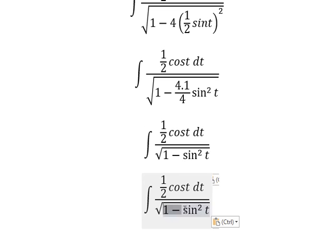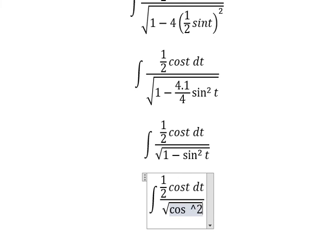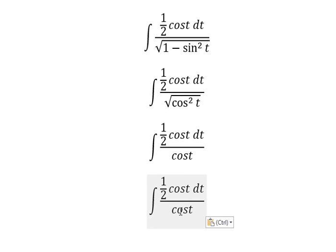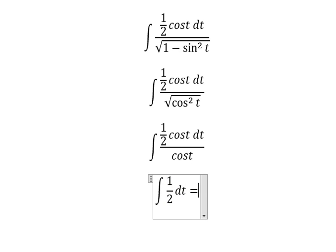This one we change for cosine² t. The square root of cosine² t becomes cosine t. Cosine t and cosine t simplify and we get 1/2 dt, and we get 1/2 t plus C.